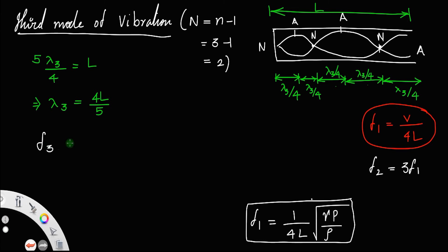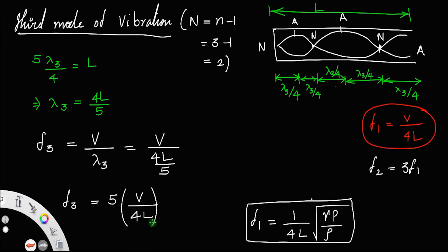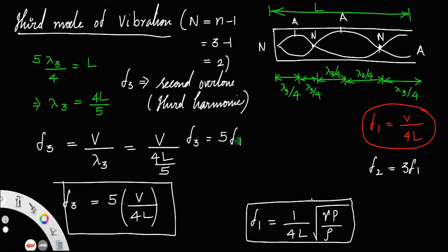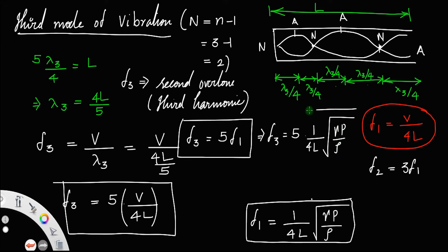The frequency f3 equals velocity divided by lambda 3, which equals v divided by 4L over 5, giving f3 equals 5v divided by 4L. Since v over 4L equals f1, we have f3 equals 5 times f1. This is the second overtone or the fifth harmonic. We can also write f3 equals 1 by 4L times root of gamma P divided by rho.